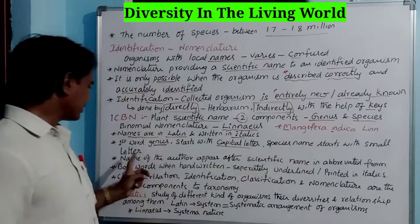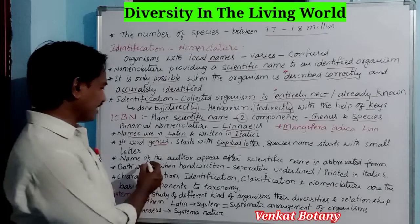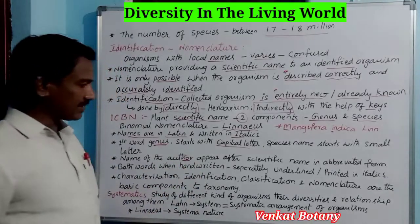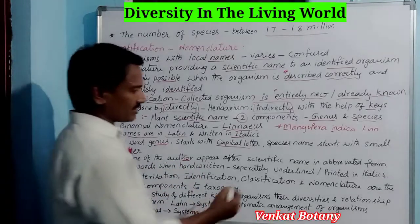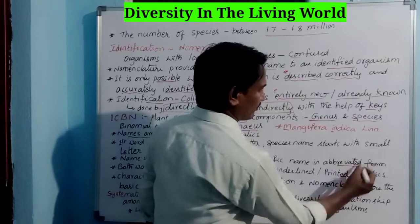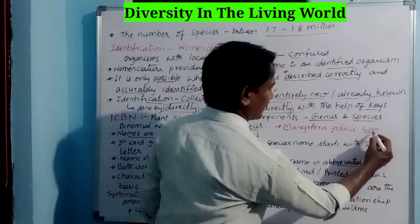Species name starts with a small letter. The author's name comes after the scientific name in abbreviated form. For example, we write Lin., where Lin. is the abbreviated form for Linnaeus.